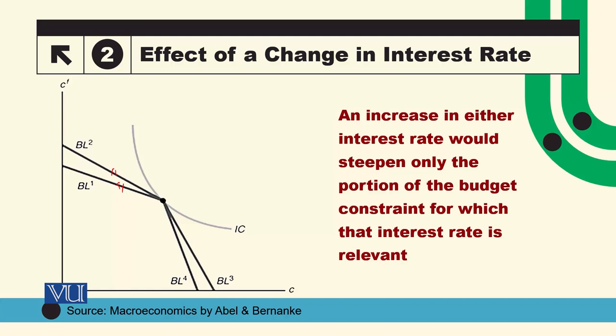اسی طرح اگر borrowing rate increase کر جاتا ہے تو increase سے پہلے اس کی budget constraint BL3 تھی، اور borrowing rate کے increase کرنے سے یہ steeper ہو جائے گی اور یہ left کی جانب shift ہو جائے گی۔